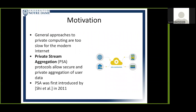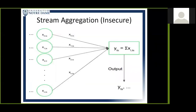For many applications, general approaches to private computing are simply too slow for the demands of the modern internet. Private stream aggregation protocols were developed as a response to this. PSA protocols allow secure and private aggregation of user data for later computation. PSA was first introduced by the work of Scheu et al. in 2011. In stream aggregation, we have a scenario where users take their time series data and send it to a central aggregator, who will then compute and learn the sum of all user data at a particular time point. However, this is insecure, as the aggregator is able to learn the data point of any one user.